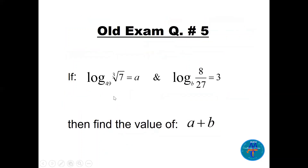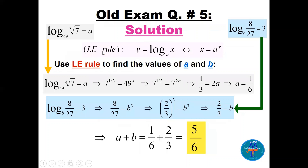Question five: solve for a and b separately then add. For part a: log base 49 of the cube root of 7 equals a. Using the LE rule: 7 to the one-third equals 49 to the power a, which is 7 squared to the power a. Since the bases are the same, one-third equals 2a, so a equals one-sixth.